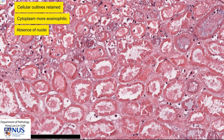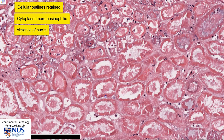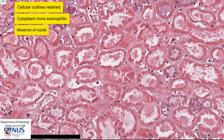In some areas, there is just a shadowy outline of what's remaining of a nucleus, maybe karyolytic features. But in many areas, the nuclei are actually gone. So this preservation of the cellular outlines, the increased eosinophilia of the cytoplasm, and the absence of nuclei are classical features of coagulative necrosis.